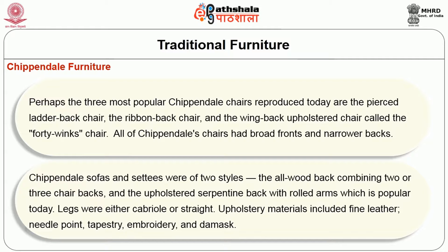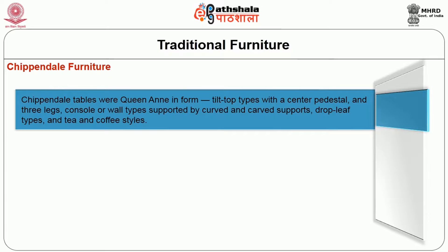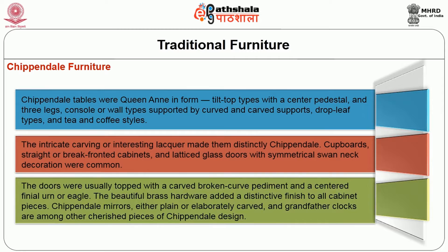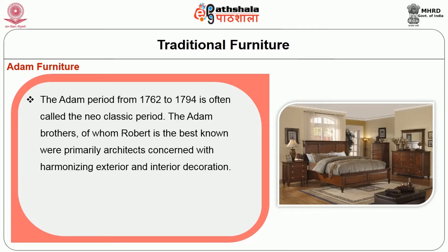Chippendale tables were Queen Anne in form: tilt top types with a centre pedestal and three legs, console or wall types supported by curved and carved supports, drop leaf types, and tea and coffee styles. Intricate carving or interesting lacquer made them distinctly Chippendale. Cupboards, straight or break-fronted cabinets, and lattice glass doors with symmetrical swan neck decoration were common. The doors were usually topped with a carved broken curved pediment and a centred finial, urn, or eagle. Beautiful brass hardware added a distinctive finish to all cabinet pieces. Chippendale mirrors and grandfather clocks are among other cherished pieces of Chippendale design.